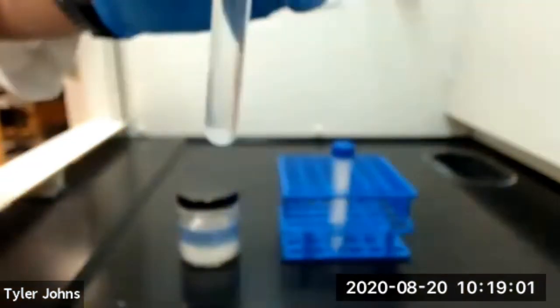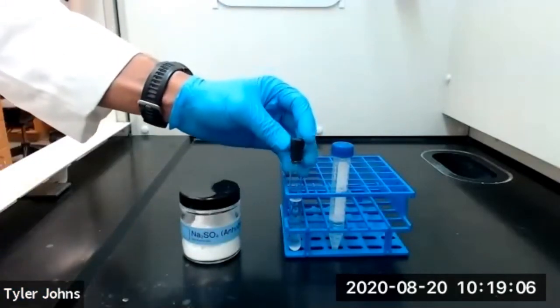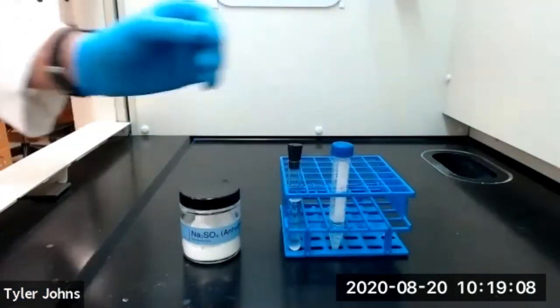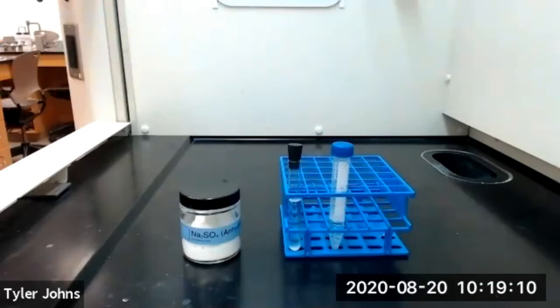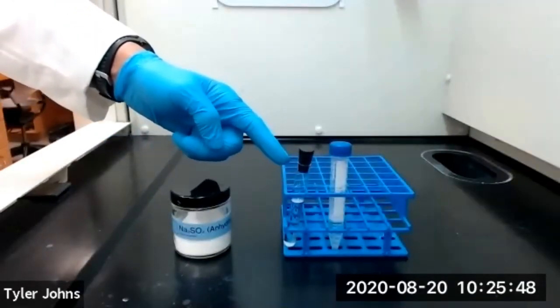We'll now set our test tube in the rack and stopper it and allow it to continue drying for a period of about 10 to 15 minutes. While our methylene chloride solution continues to dry, we need to pre-weigh a 10 milliliter Erlenmeyer flask.